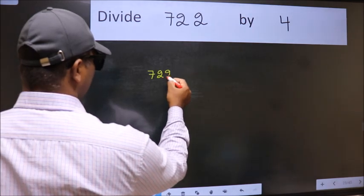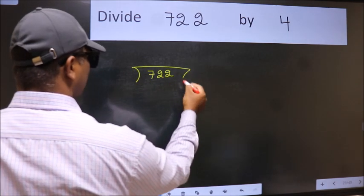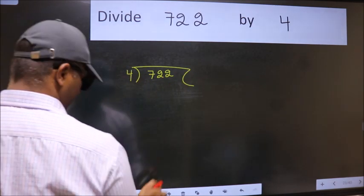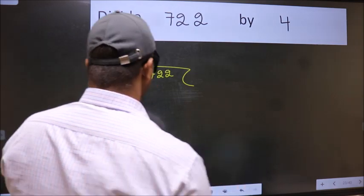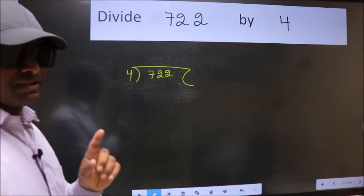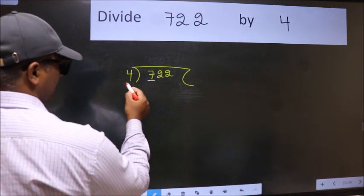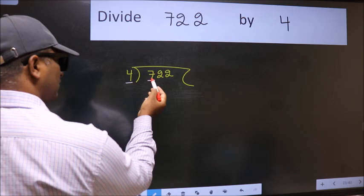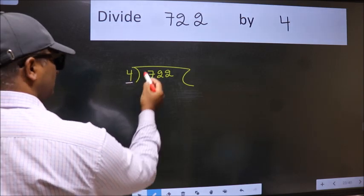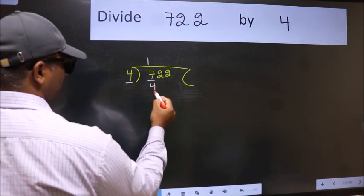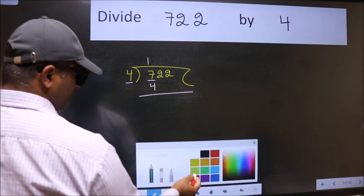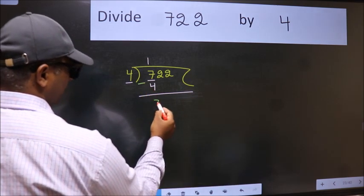722 here, 4 here. This is your step 1. Next, here we have 7 and here 4. A number close to 7 in the 4 table is 4 once 4. Now we should subtract. We get 3.